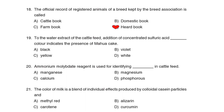19th Question: In the water extract of cattle feed, addition of concentrated sulfuric acid producing a dash color indicates the presence of Mahua cake. Correct Answer: Option B: Violet. 20th Question: Ammonium Molybdate reagent is used to identify Correct Answer: Option D: Phosphorus.